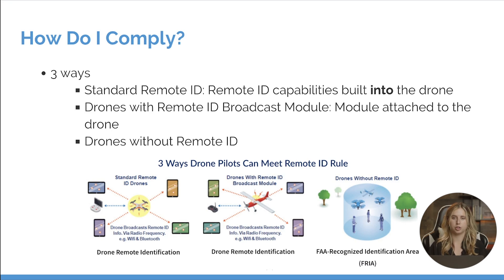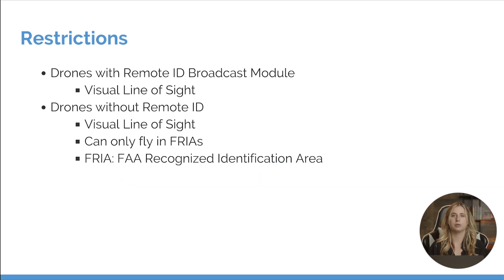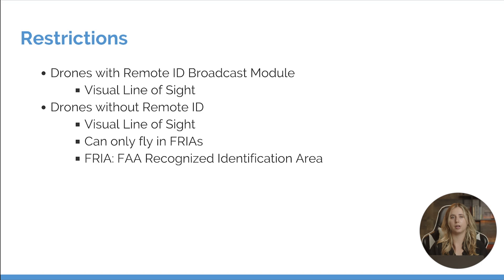If you're going to be operating your drone without remote ID, then you are restricted to flying only in an FAA recognized identification area. To reiterate those restrictions: if you are operating your drone with the remote ID broadcast module, you are still restricted to operating within visual line of sight. If you are going to be operating your drone without remote ID, you are limited to visual line of sight and can only operate in a FRIA, or FAA recognized identification area.